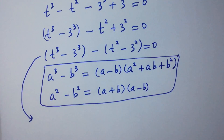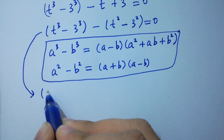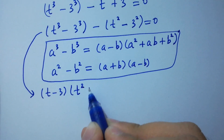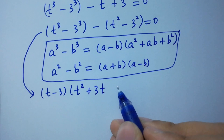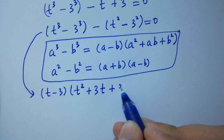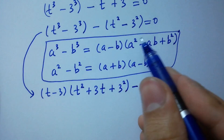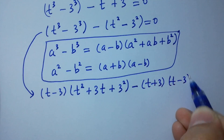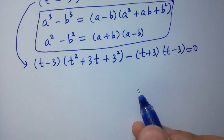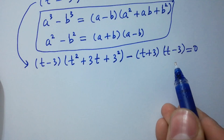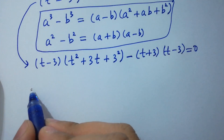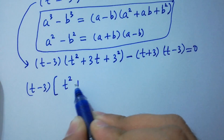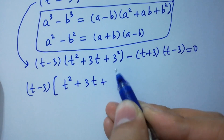So it will be (t minus 3)(t squared plus 3t plus 3 squared) minus (t squared minus 3 squared) expanded as (t plus 3)(t minus 3) equal to 0. Here t minus 3 and t minus 3 can be taken as common factor.